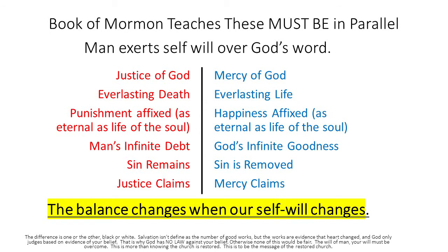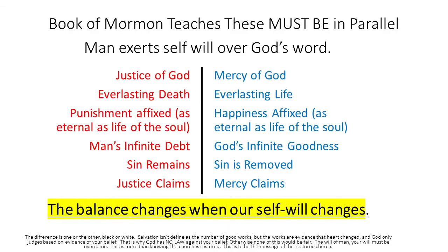The balance of life is in an opposition — there's good on one side, evil on the other, and God made us free in the middle. The things that are balanced: the justice of God, the mercy of God, everlasting death, everlasting life, punishment affixed, happiness affixed, man's infinite debt, God's infinite goodness. Sin either remains with us forever or sin is forever removed. Justice claims us or mercy claims us. This is all what Lehi teaches his young children — this is where pre-baptismal classes need to begin.